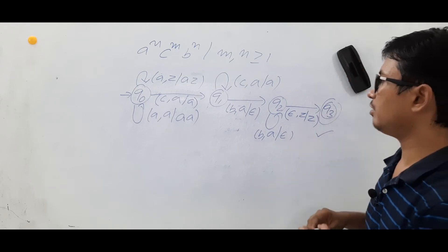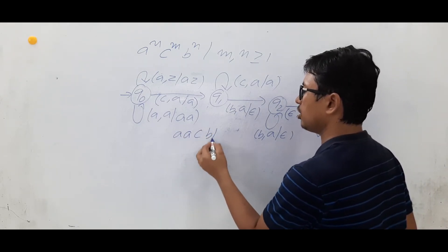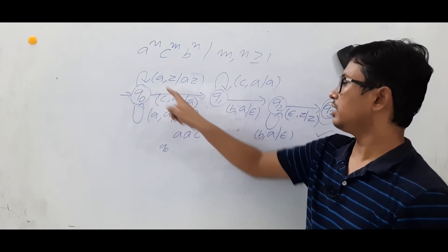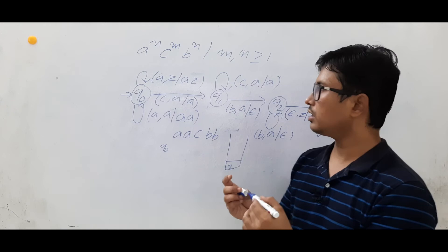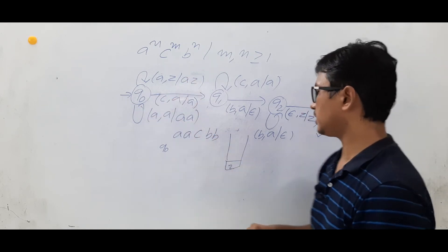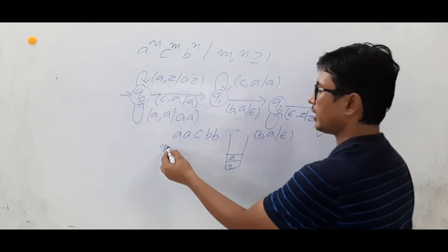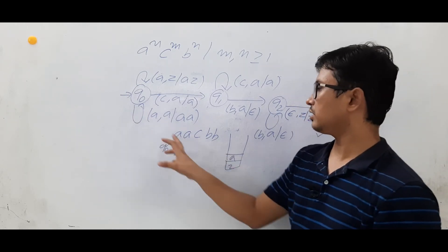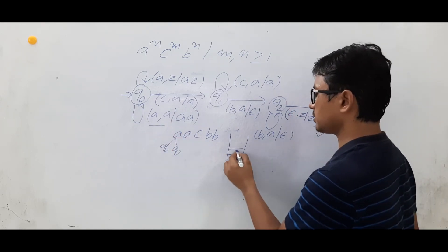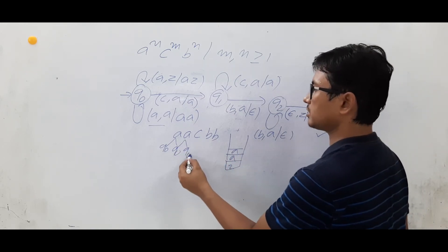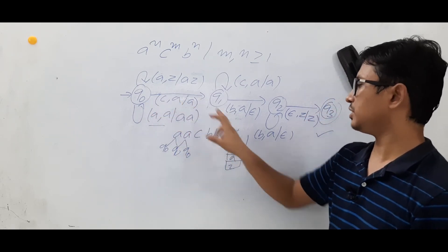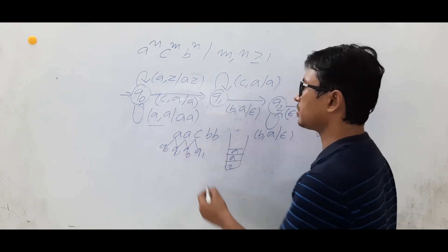Let's verify by taking a string that belongs to this language. I am in state q0, stack currently has Z. Input symbol 'a' with stack symbol Z — I push 'a' and stay in q0. Then input 'a' with stack symbol 'a' — push operation again, stay in q0. Then on input 'c' from q0 with stack symbol 'a' — I keep it as 'a', performing the skip operation, and reach state q1.